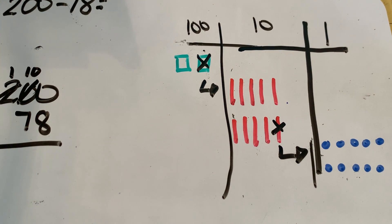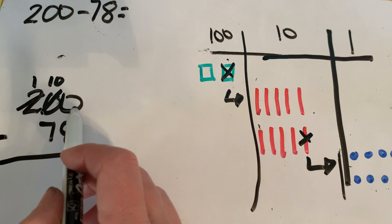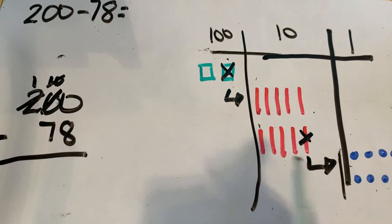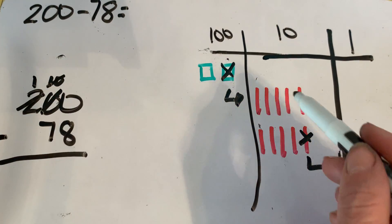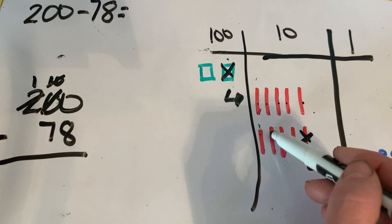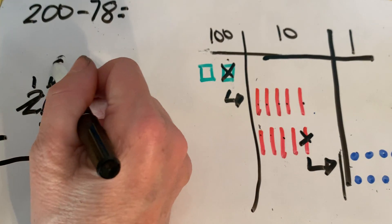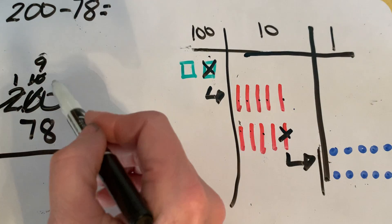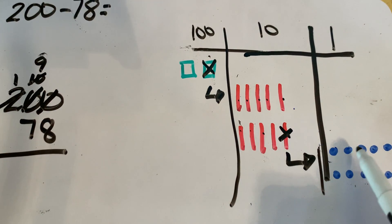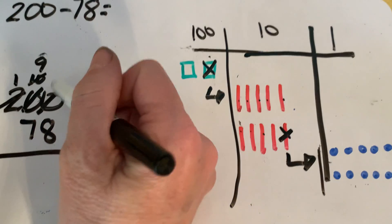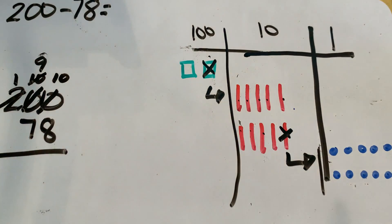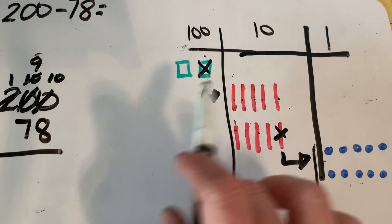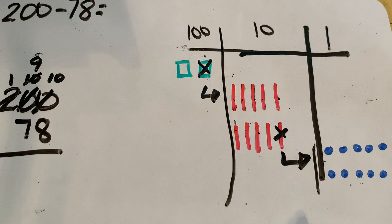Let's write out what we did. We had zero tens, then we had ten tens. We decomposed one of those tens, which left us with nine tens. And then instead of having zero ones, we now have ten ones. Remember, we've done a lot of decomposing but we haven't actually taken anything away yet — we should still have two hundred represented in our picture.